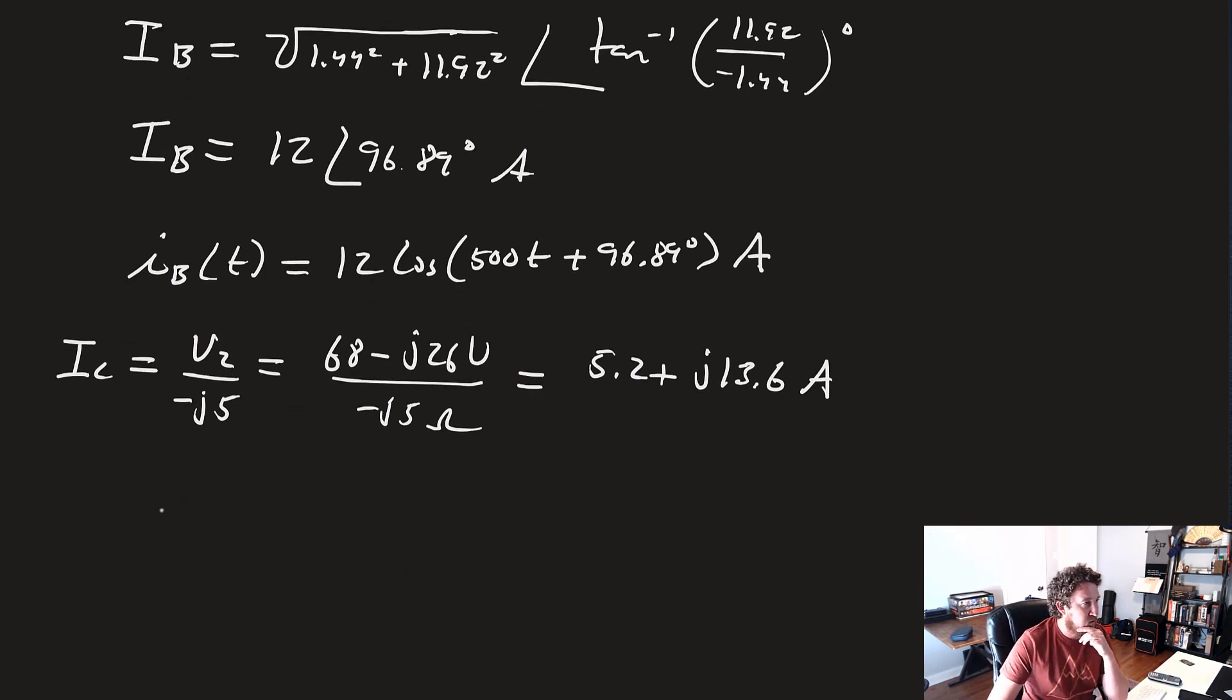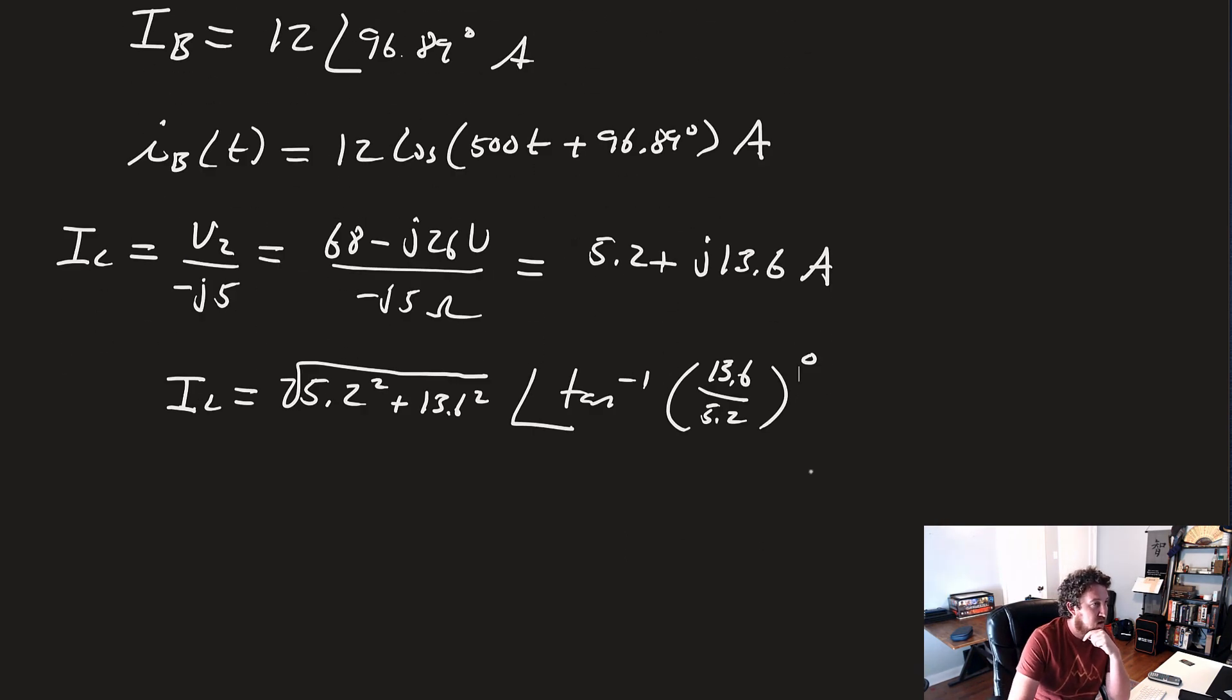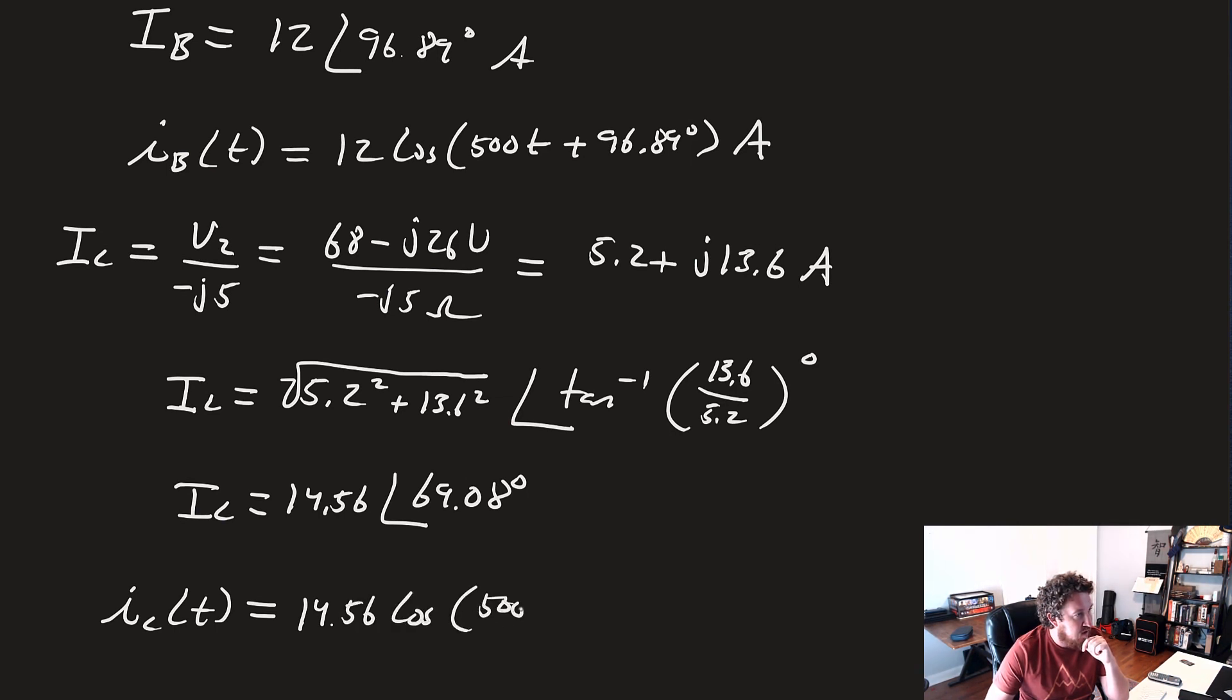And like with the rest of them, let's find the polar form. I sub C equals the square root of 5.2 squared plus 13.6 squared at an angle of inverse tangent of 13.6 over 5.2 degrees. This gives us a polar form of 14.56 at an angle of 69.08 degrees. Then we put that in our steady state form: the steady state sinusoid current I sub C equals 14.56 times the cosine of 500t plus 69.08 degrees.